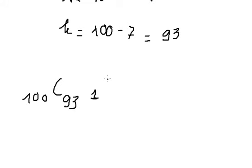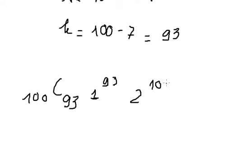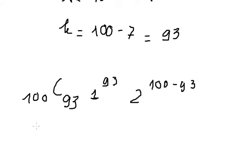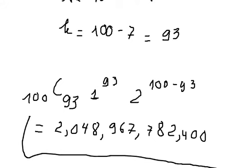Now we substitute k equal to 93 into the combination formula and calculate. The final answer is 204,896,778,400. This is the coefficient of s to the power of negative seven.